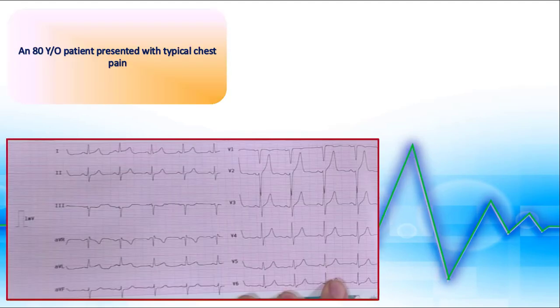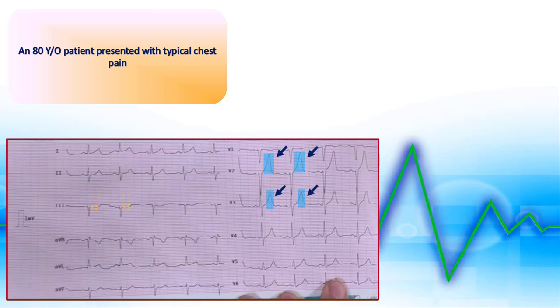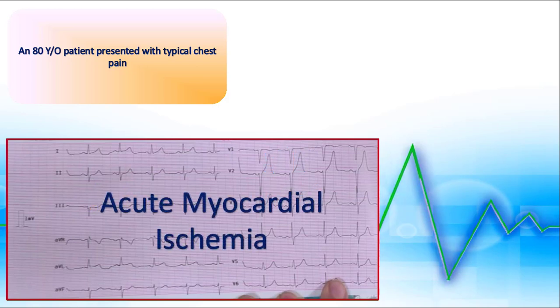The next strip belongs to an 80-year-old patient presented with typical chest pain. There are symmetrical tall T waves in V2 and V3 with ST depressions in D3, which suggests acute ischemia.